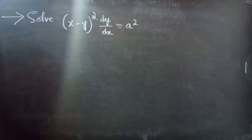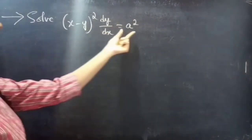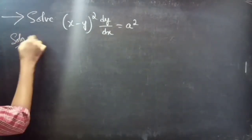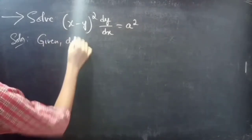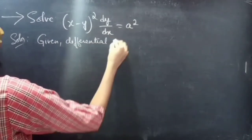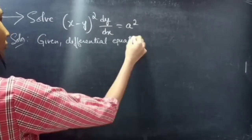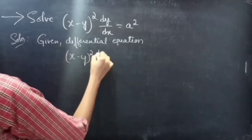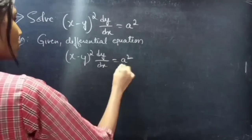Problem. Solve: (x minus y) whole square into dy by dx equals to a squared. This is the given differential equation, consider as equation 1.